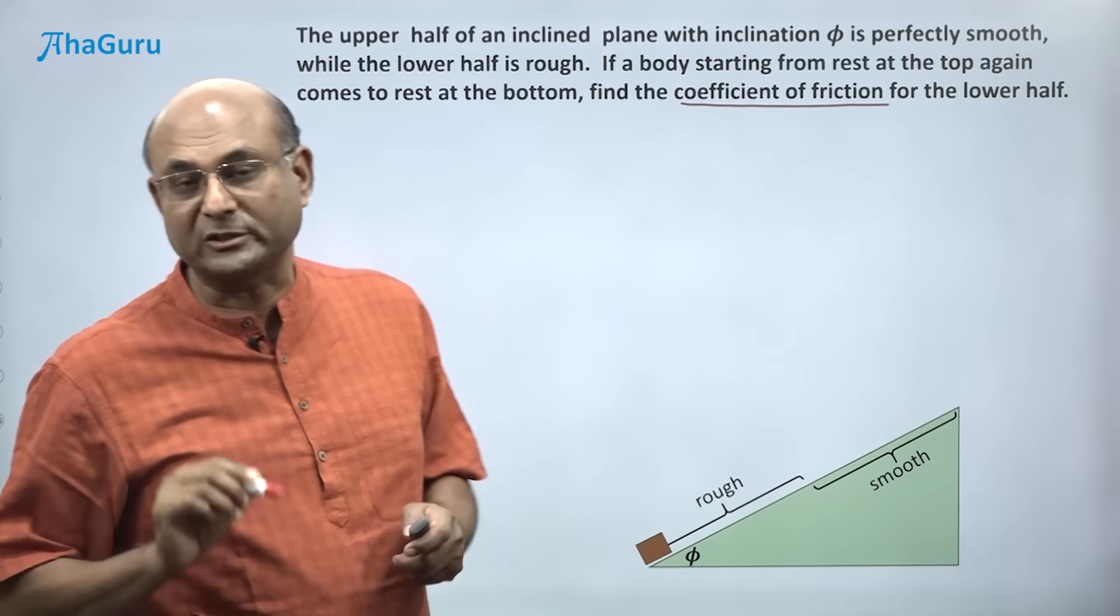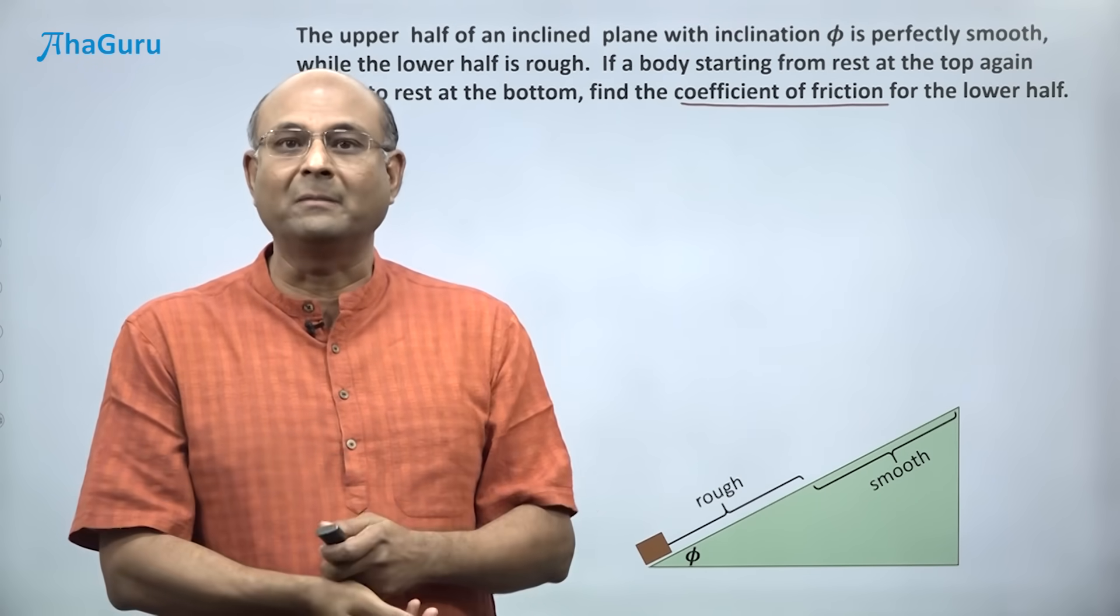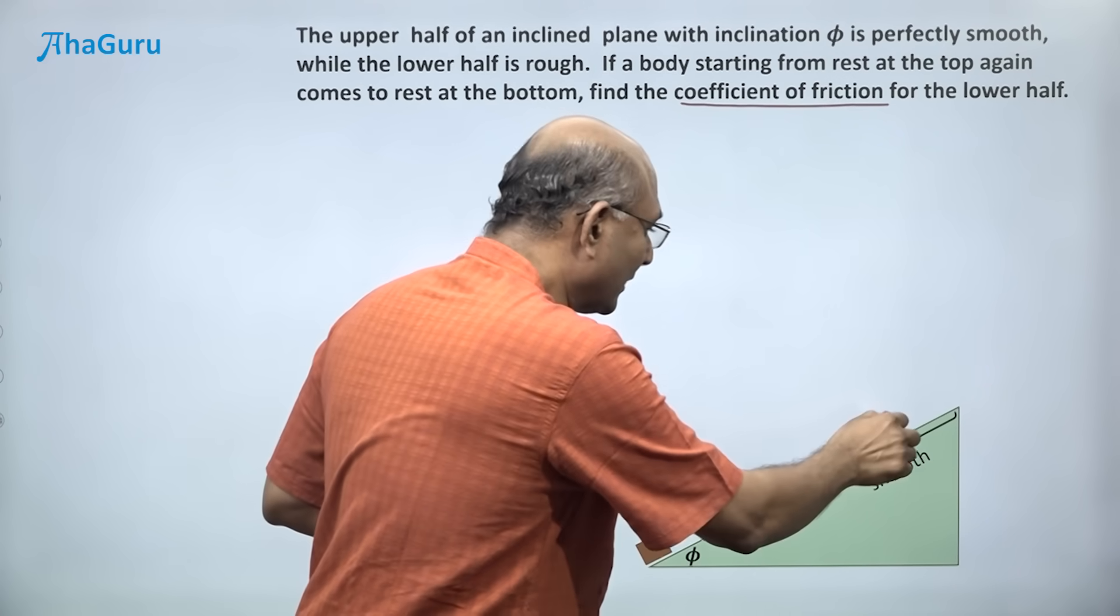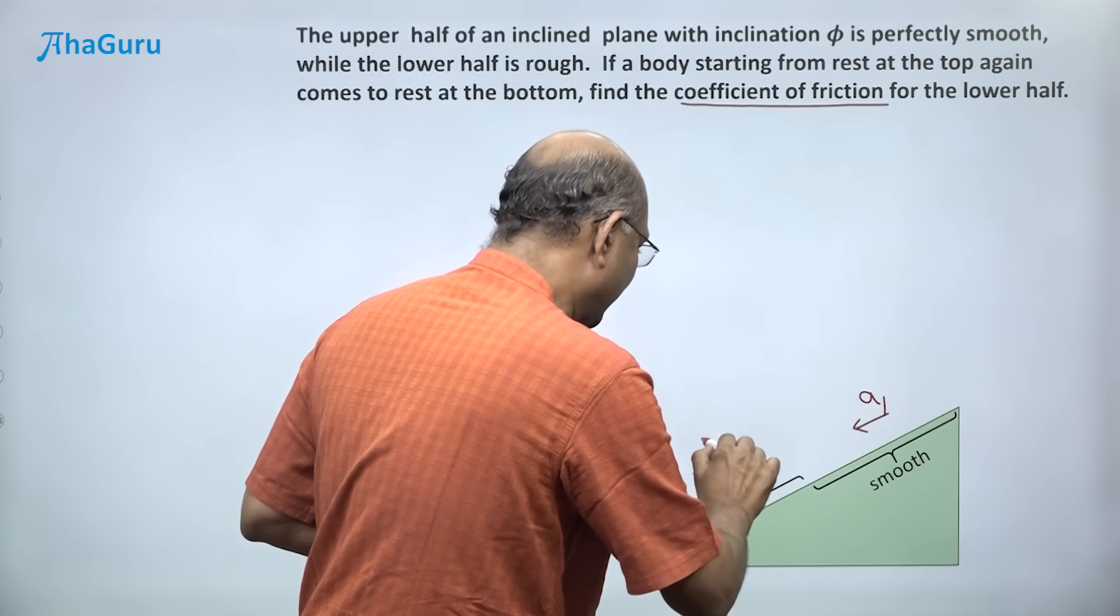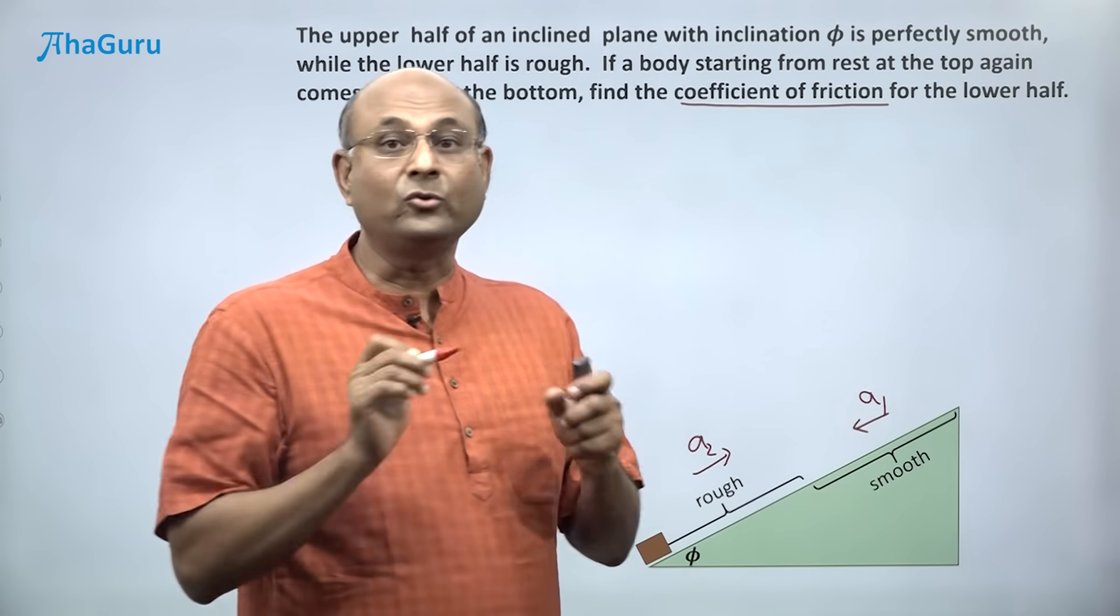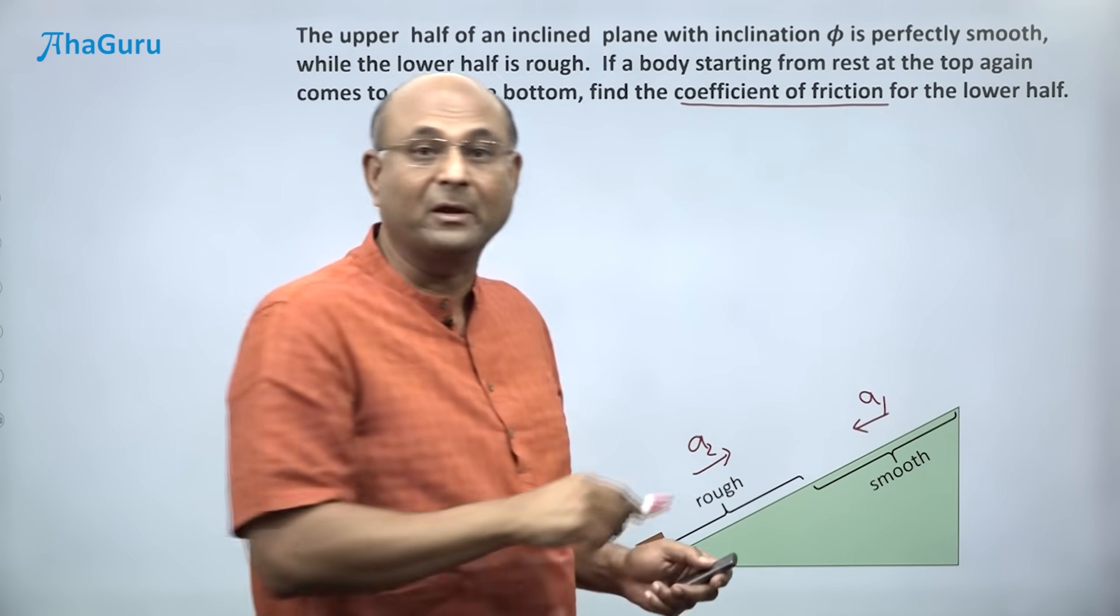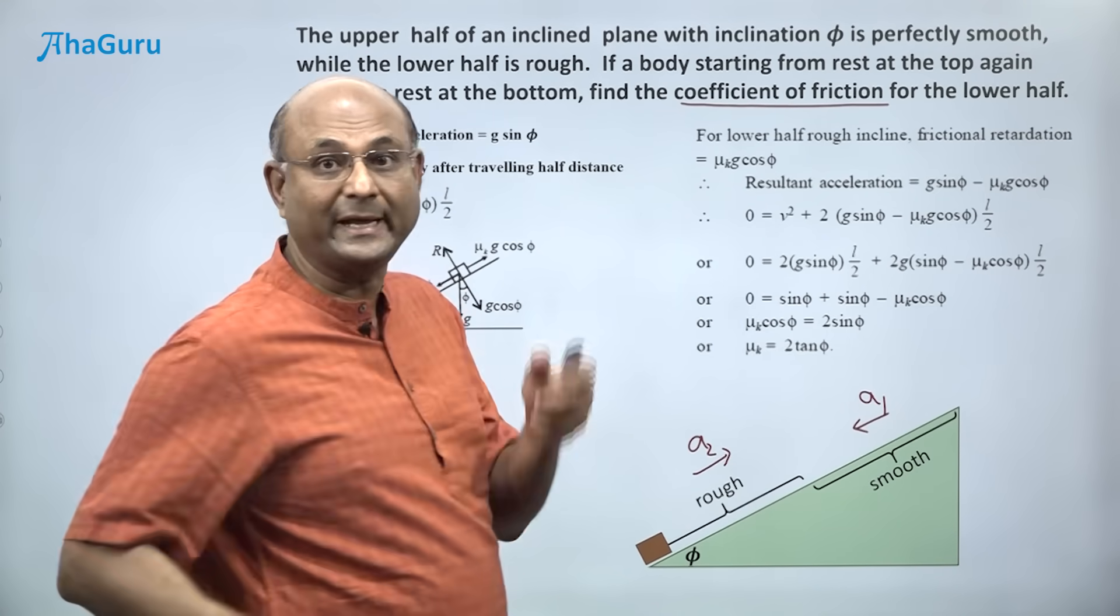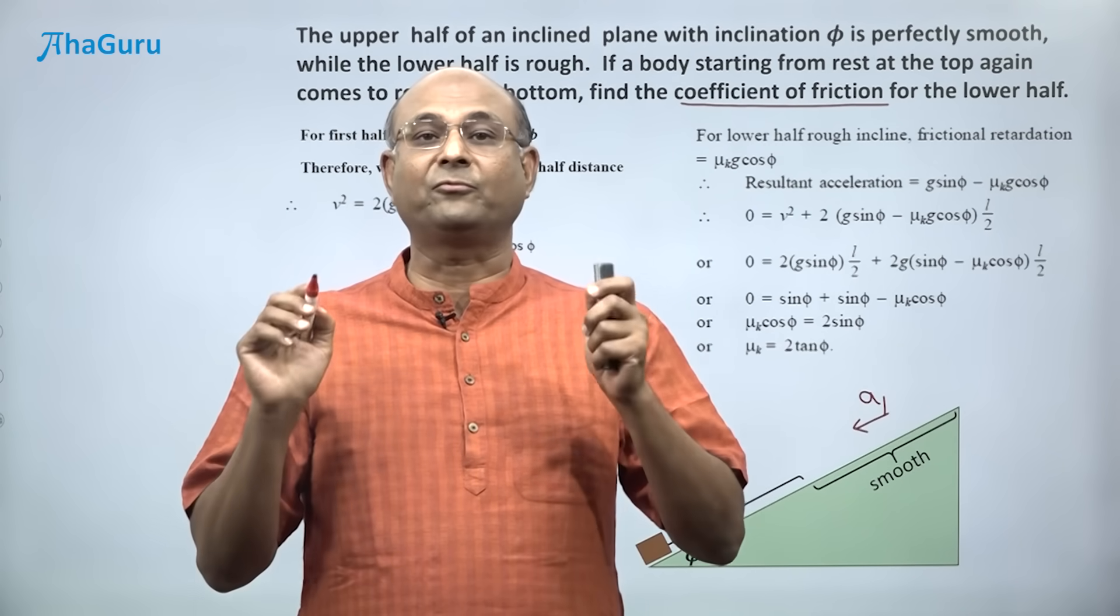How do we go about doing it? There are many different ways to solve this problem. One common way that people use is to use Newton's laws to find out the acceleration here and the acceleration there, and then use the equations for uniform accelerated motion. It's a long approach. This is a solution somebody had posted. You can see how long this is. Easily it can take you five minutes.